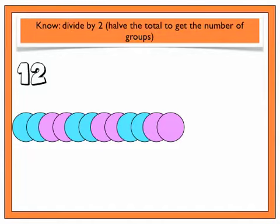Let's start with dividing by 2. Here are 12 counters. If I wanted to give each of my friends 2 counters, how many friends will get a set each? Let's watch this model.